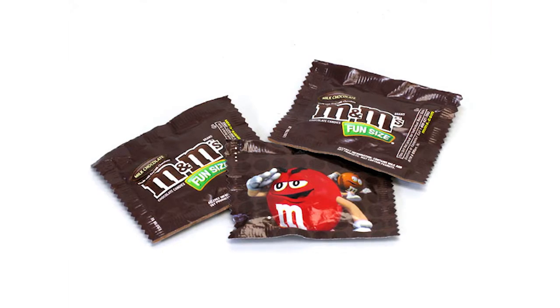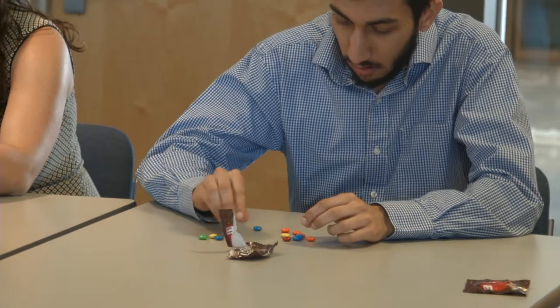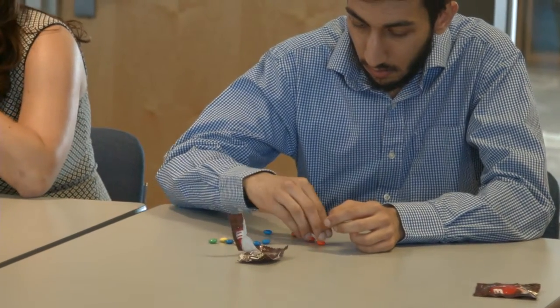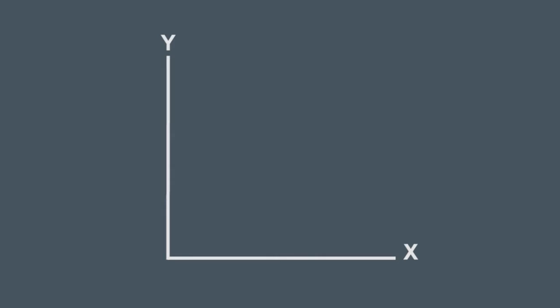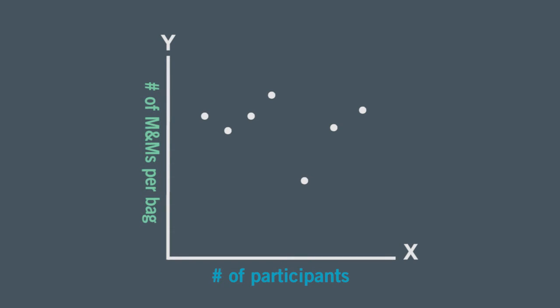The setup is simple. Your facilitator will hand out a small pack of M&Ms to each participant. Count your M&Ms in secret, and then share the number with the facilitator when you're called on. Your facilitator will plot out the number of M&Ms in each bag on a run chart. The x-axis shows the number of participants across the bottom, and the y-axis shows the count of the M&Ms. Remember, no eating yet — it's just counting.